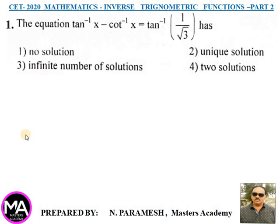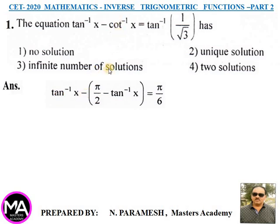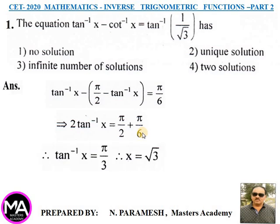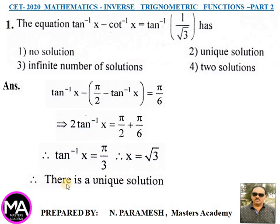Question 1: The value of x for which tan⁻¹x − cot⁻¹x = tan⁻¹(1/√3). Answer: tan⁻¹x − (π/2 − tan⁻¹x) = π/6, so 2tan⁻¹x = π/2 + π/6 = 4π/6, giving tan⁻¹x = π/3, therefore x = √3. There is a unique solution; option 2 is correct.